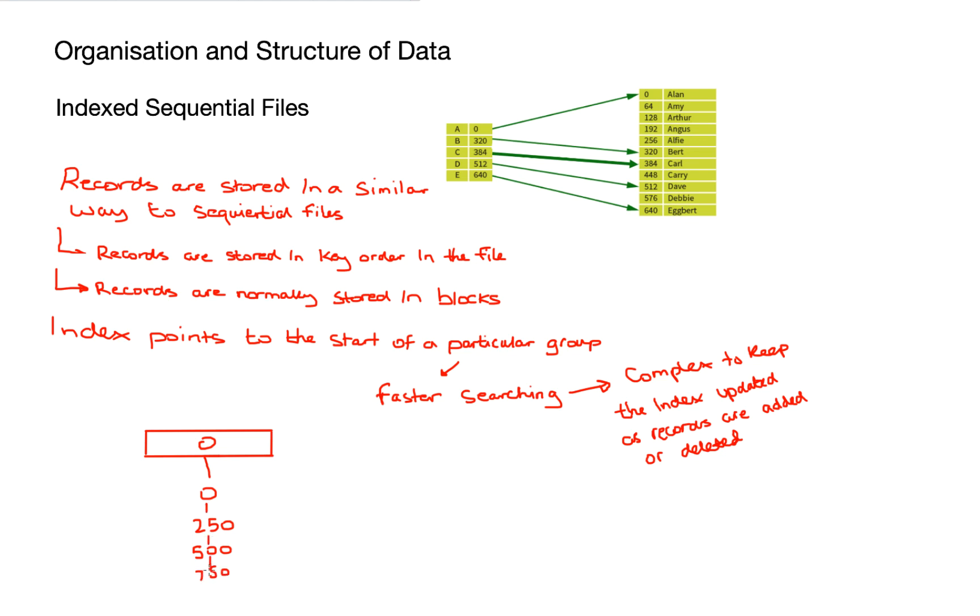There is one major advantage to using index sequential files, and that's the use of multi-level indexes. If I take a simple index of 0 to 1000, I can split that into blocks of 0 to 250, 251 up to 500, and 501 to 750 for example, and 750 to 1000. Then I can add in more indexes, so up to 1000 to 2000 and 2000 up to 3000. And I can group all those by one single identifier, which is 3000.